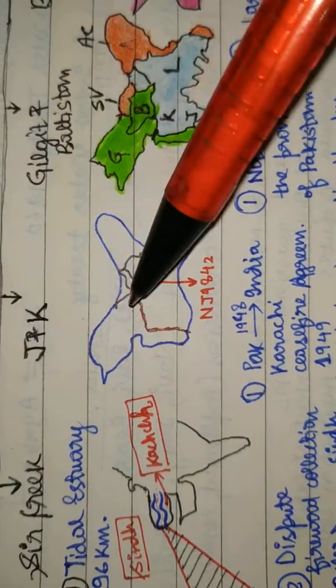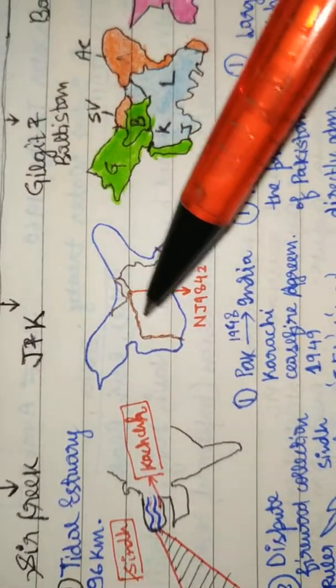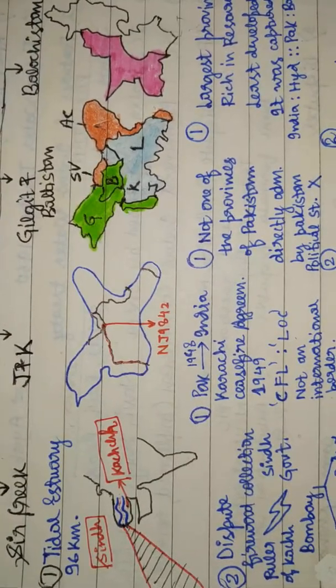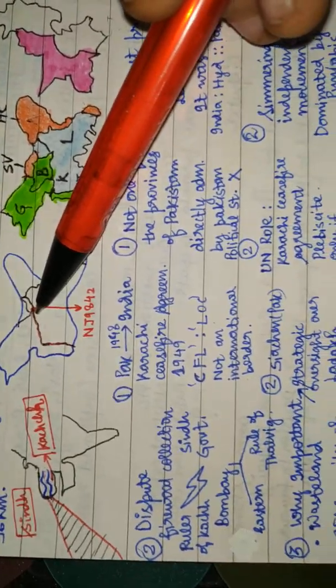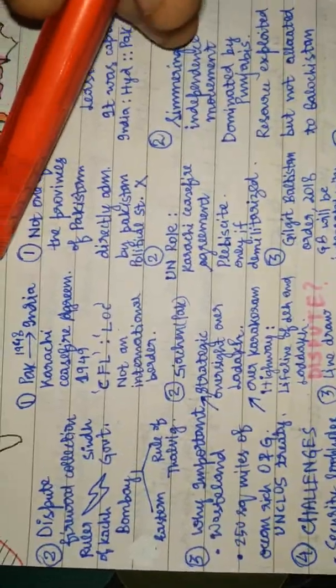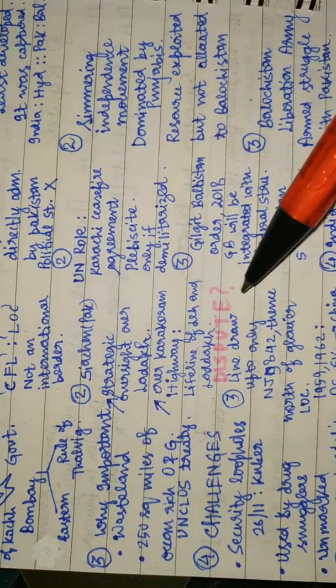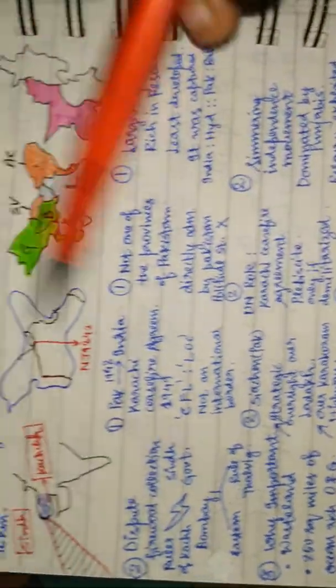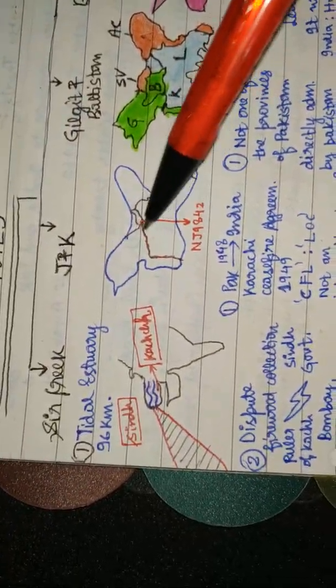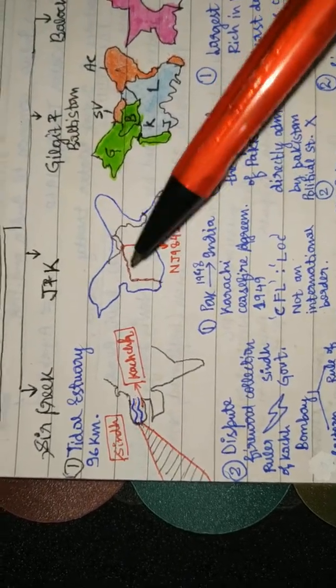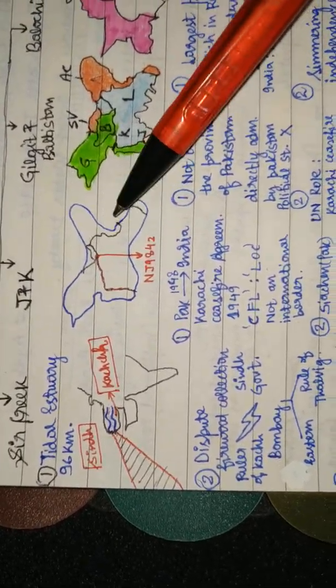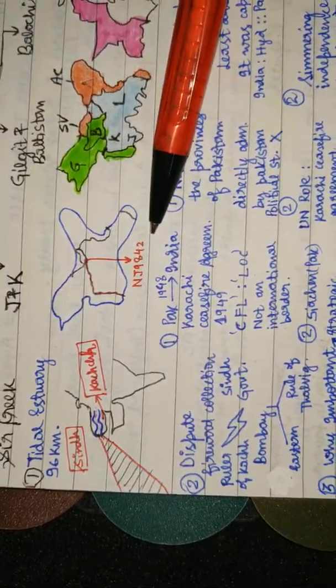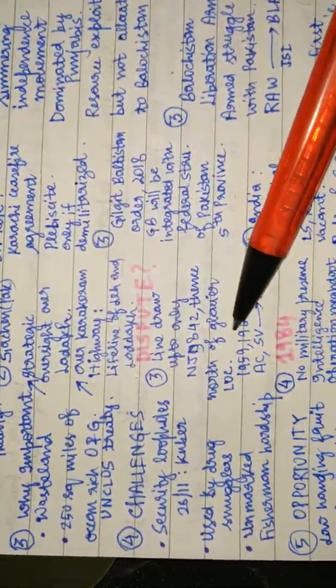The ceasefire line was drawn up till here only, to this point. This point on the map is known as NJ9842. In the agreement it was written that beyond NJ9842: 'thence north to the glacier.' This was written in the ceasefire line, the Karachi ceasefire agreement. There are different interpretations of what is thence north to NJ9842.